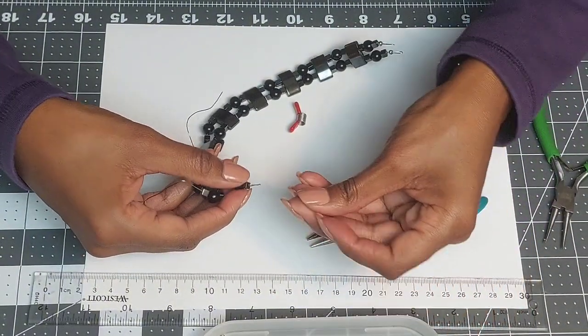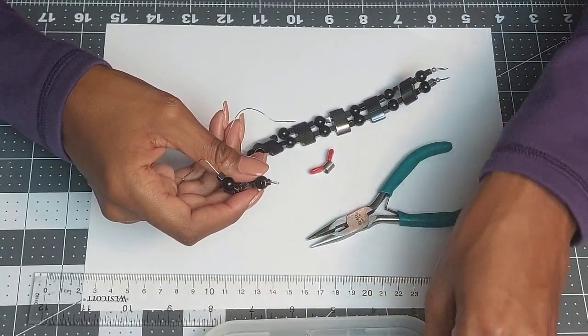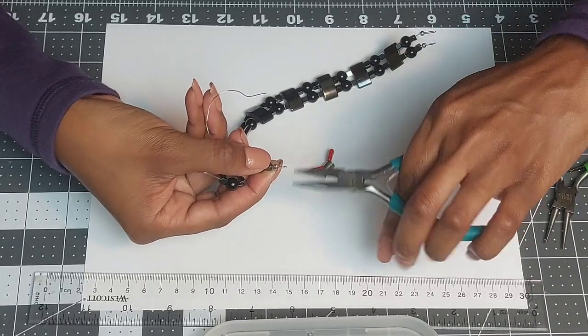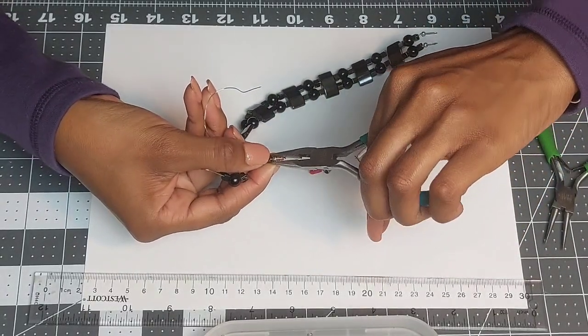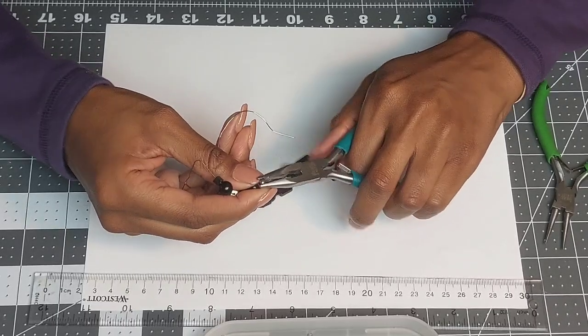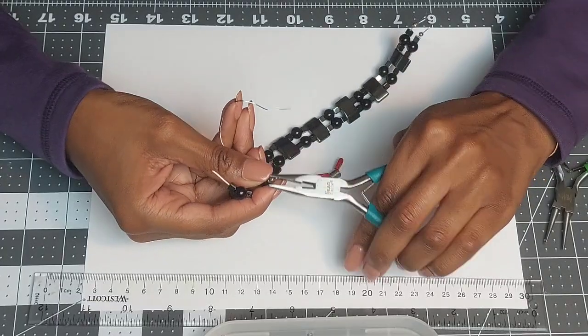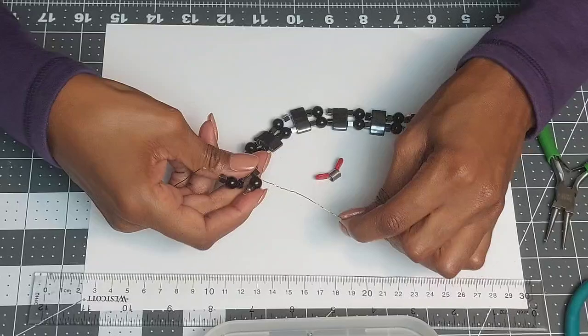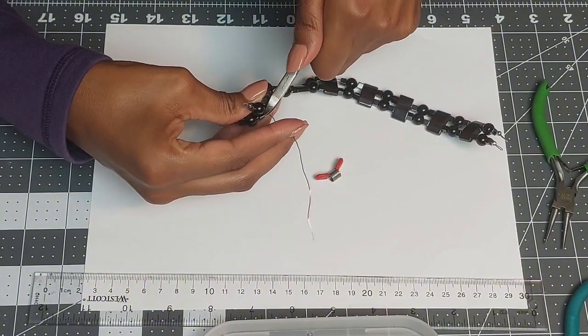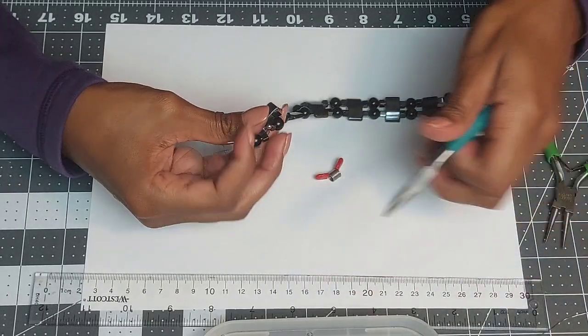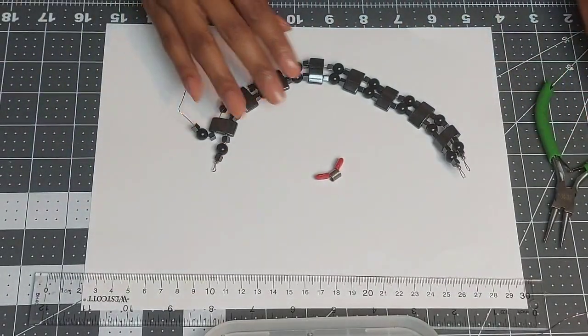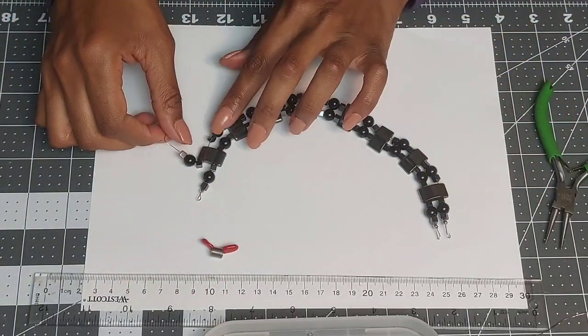All right, so we're going to grab our other crimp cover. And if it doesn't fit around, try another one, or we may have to smush our crimp bead some more. I know this one is better. Okay. So you'll fit your crimp cover around. And close it around there. All right, and then we're going to cut off the excess with our flush cutters. As close as you can, because you don't want it sticking out and cutting somebody or scratching their skin. All right. One side closed. Now let's do the same with the second strand.